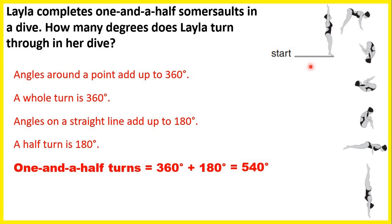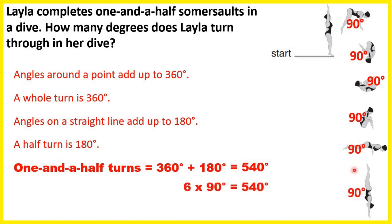The other way to solve this would be to spot that from the picture, each movement is a quarter of a turn or a 90 degree turn. So if we have 6 ninety-degree turns, that's 540 degrees altogether.